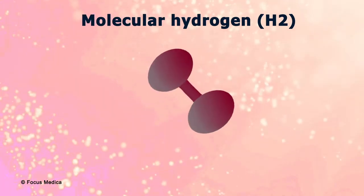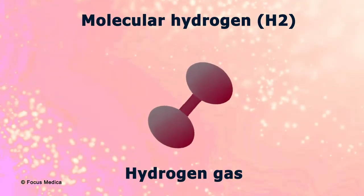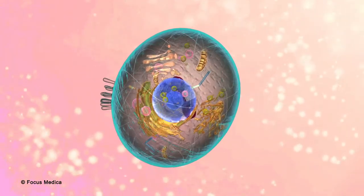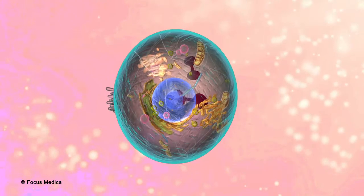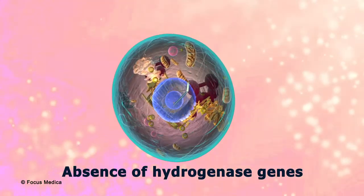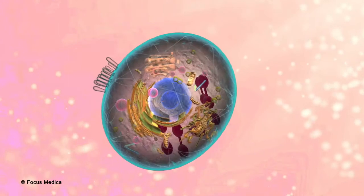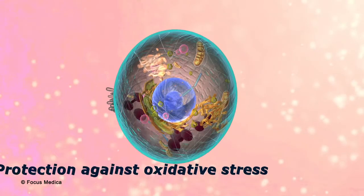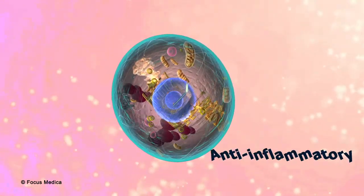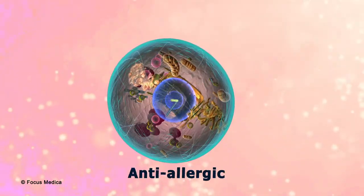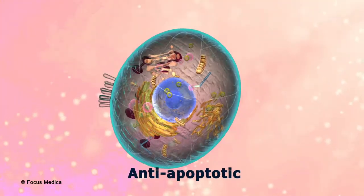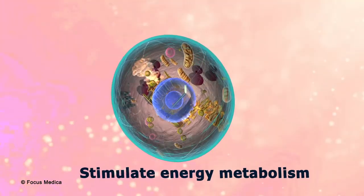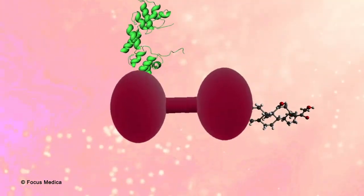Molecular hydrogen (H2), also known as dihydrogen or hydrogen gas, was long regarded as being inactive and non-functional in mammalian cells. This was attributed to the absence of functional hydrogenase genes in mammalian cells. It was subsequently found that H2 exhibits antioxidant effects, protects cells against oxidative stress, and has anti-inflammatory, anti-allergic, and anti-apoptotic functions. H2 was also found to regulate cell death and autophagy, and to stimulate energy metabolism.